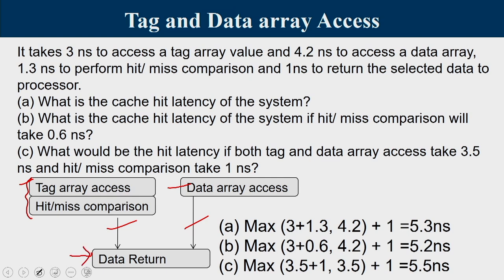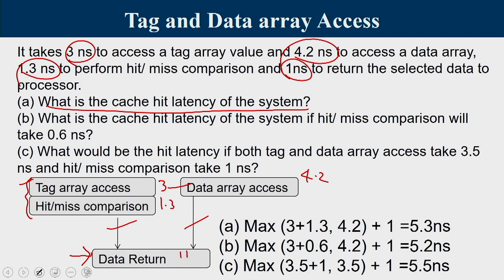For the first case: tag array access takes 3ns and data array takes 4.2ns. Hit/miss comparison takes 1.3ns. Left side: 3 + 1.3 = 4.3ns. Right side: 4.2ns. Left side is dominant at 4.3ns. Adding 1ns for data return: cache hit latency = 4.3 + 1 = 5.3 nanoseconds.